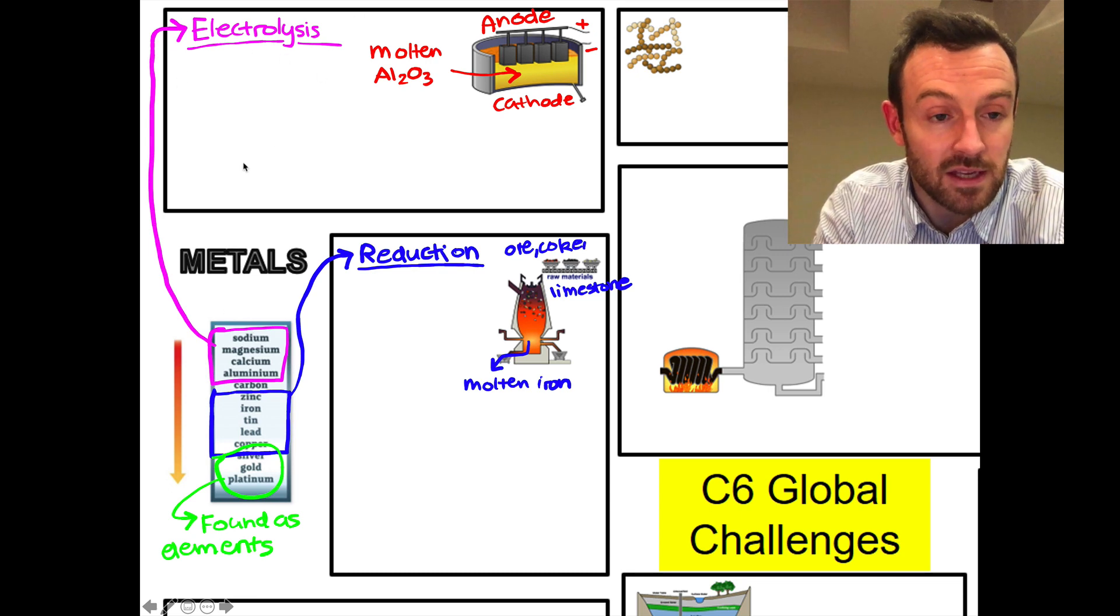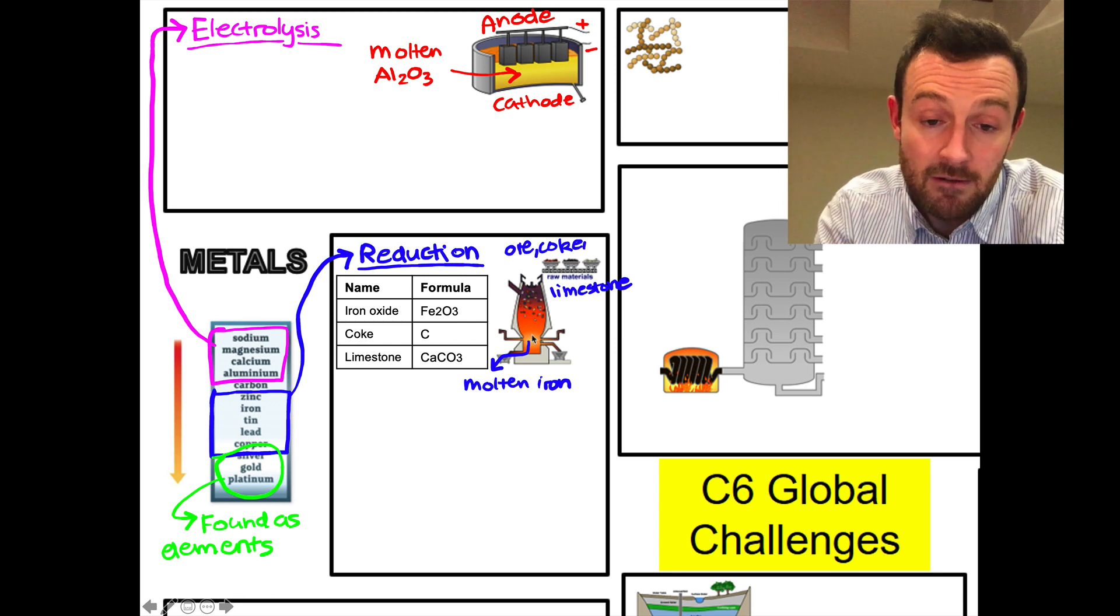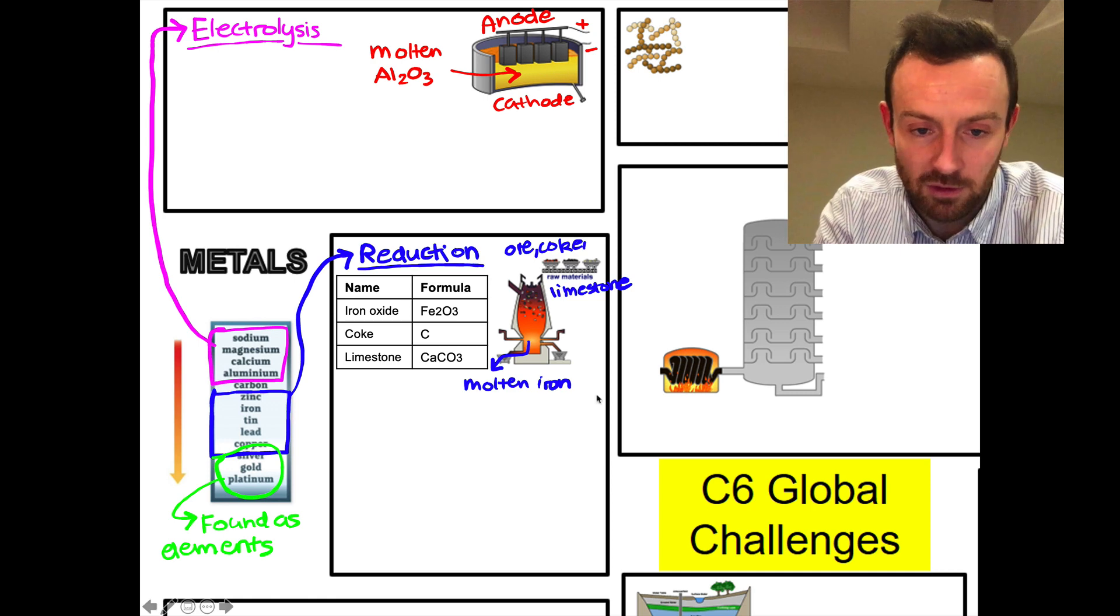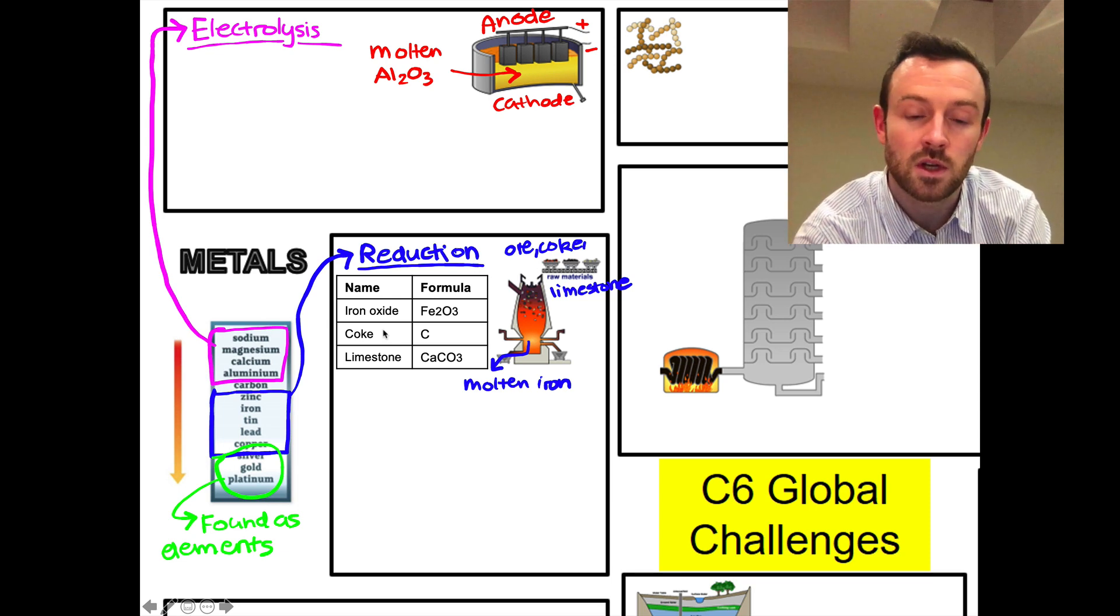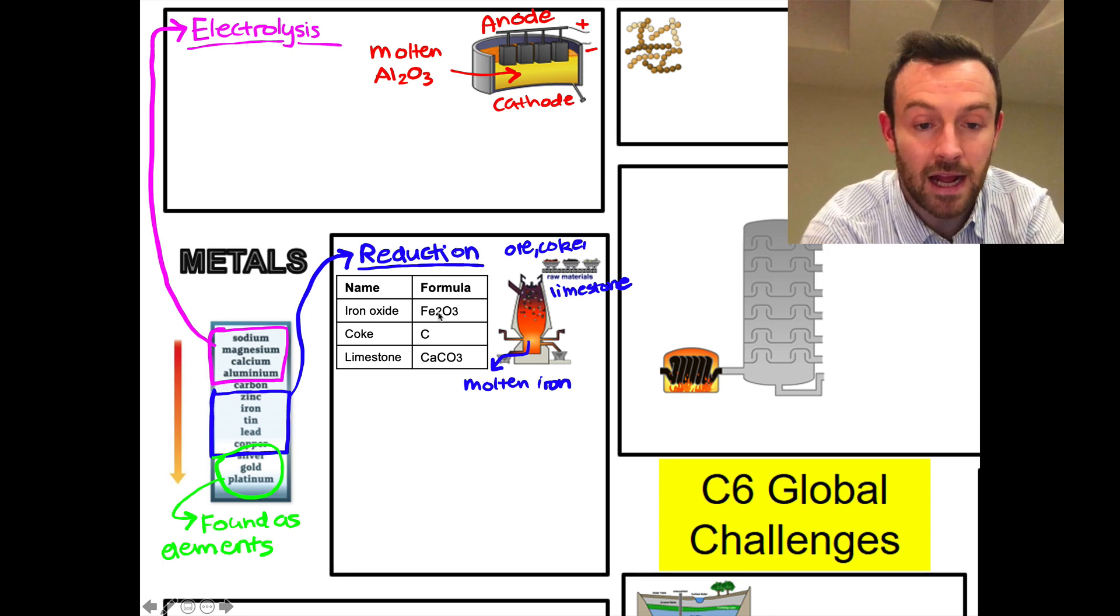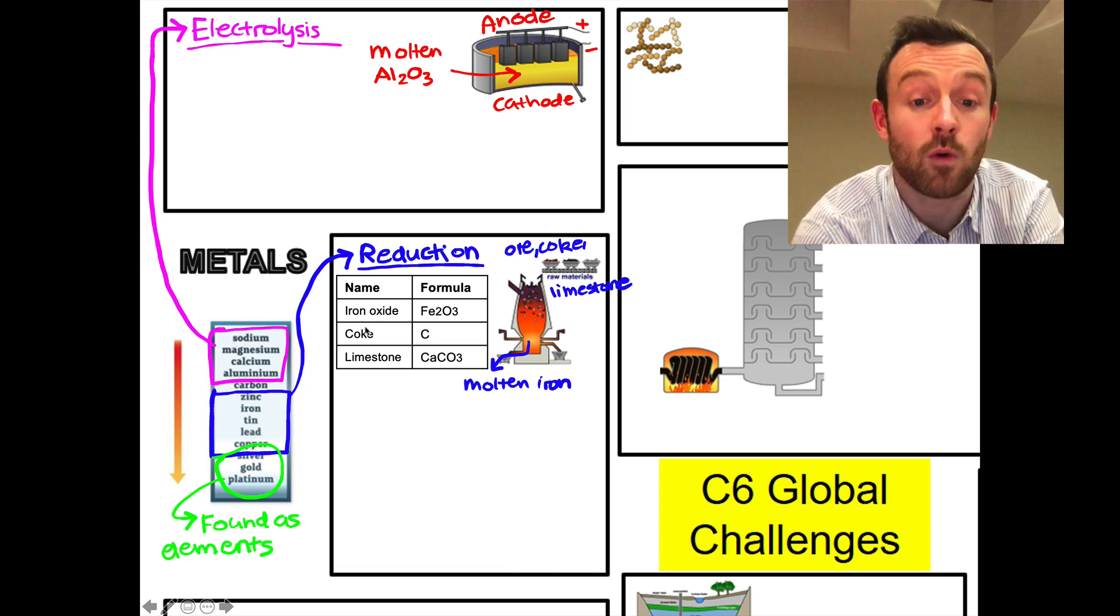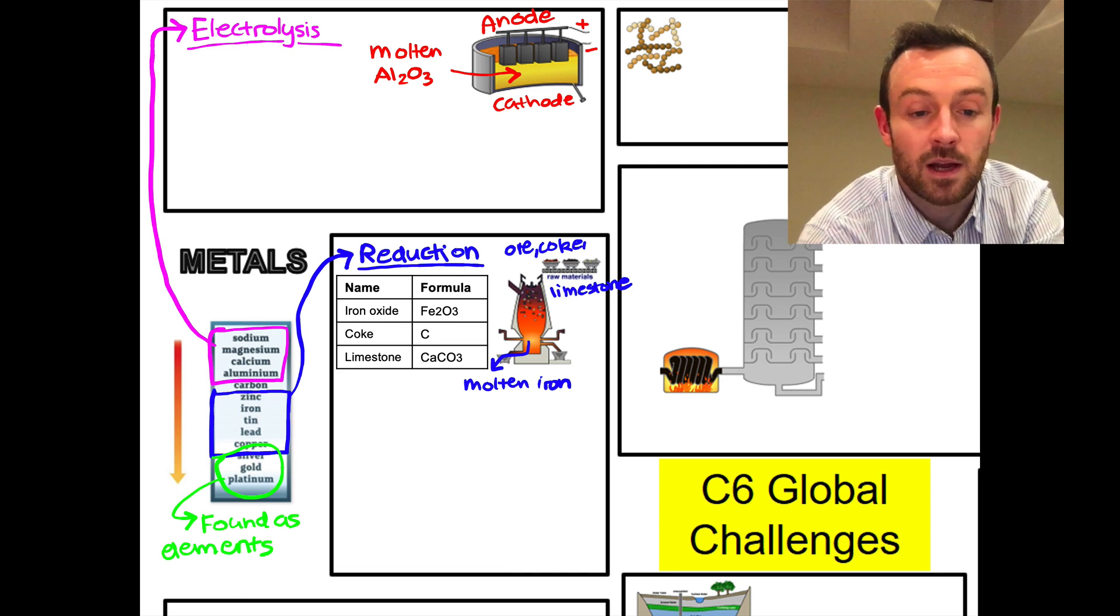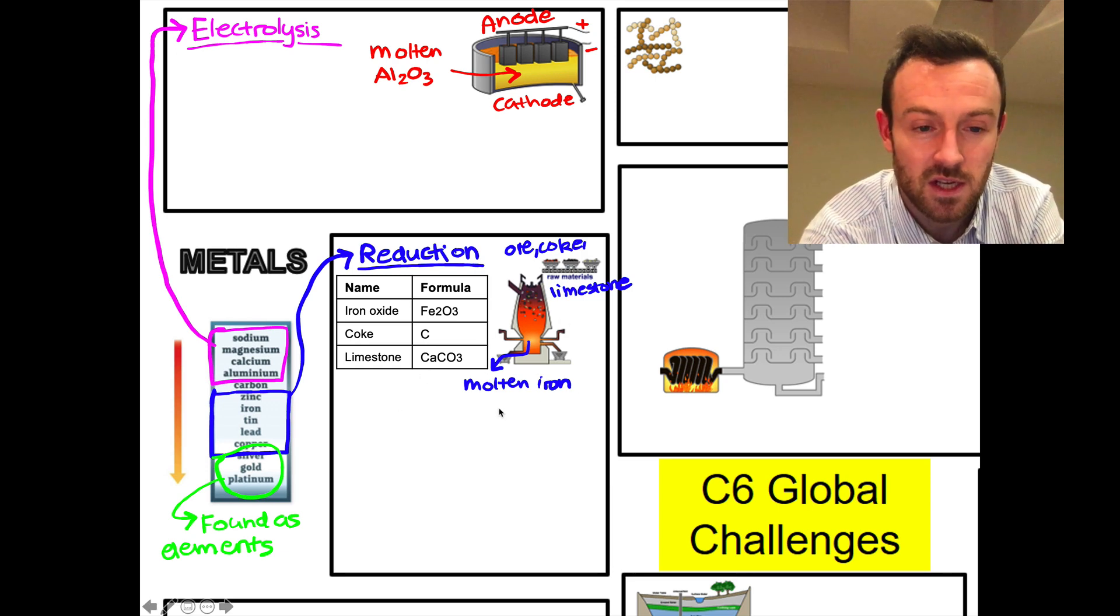Let's look at reduction first. One example of reduction is the blast furnace. This is a blast furnace over here - basically it's a really large furnace where we put three raw materials into the furnace. We put iron oxide, which is a purified version of iron ore, comes from the ore called hematite, and that's Fe2O3 - so two iron ions and three oxygen ions. Then we also have coke, which is a powdered form of carbon, kind of like powdered charcoal. And we also have limestone, which is calcium carbonate.